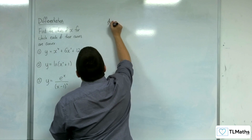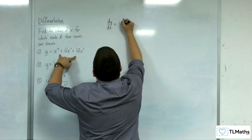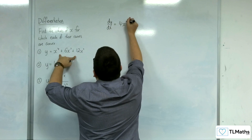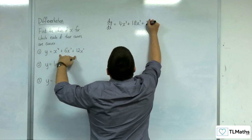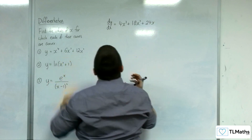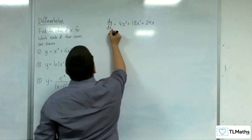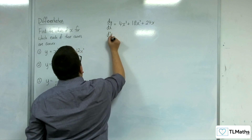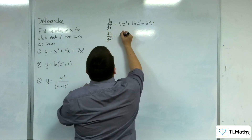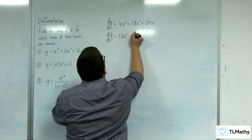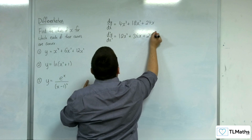We're going to go straight to number one. What I need to do is find dy/dx. So differentiating this, we're going to get 4x cubed plus 18x squared plus 24x — bog-standard differentiation there. Then we need to find the second derivative, d²y/dx², so we would get 12x squared plus 36x plus 24.